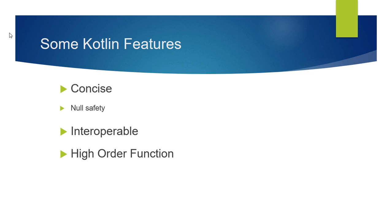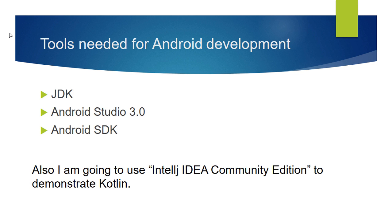We will talk about these features later in this course after finishing the basic needs of Android development. Tools needed for Android development: JDK, Android Studio 3.0 or above, and Android SDK. You need to install the software in this order: JDK, Android Studio, and Android SDK.